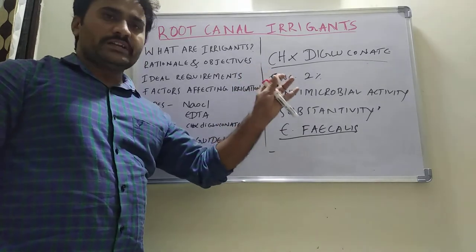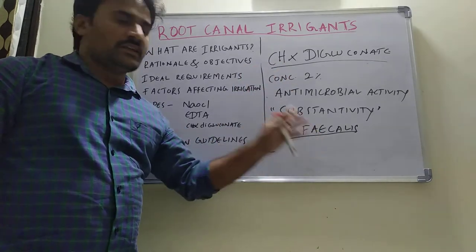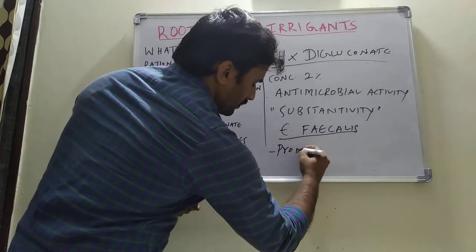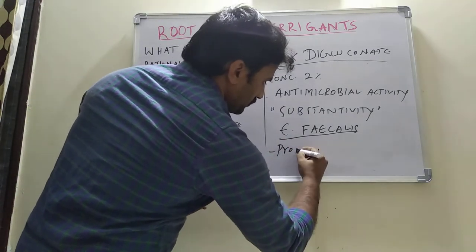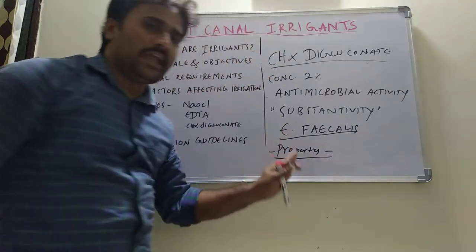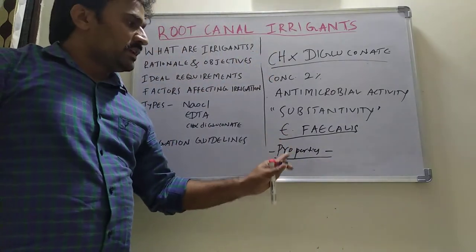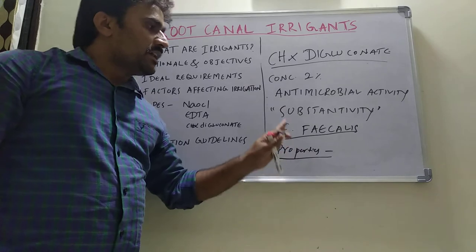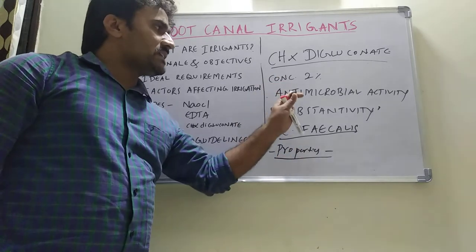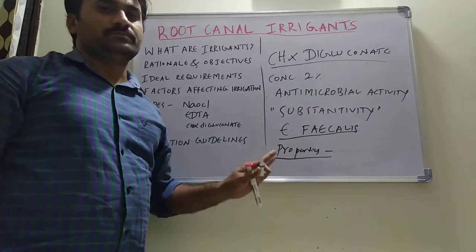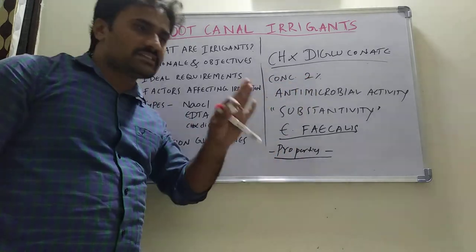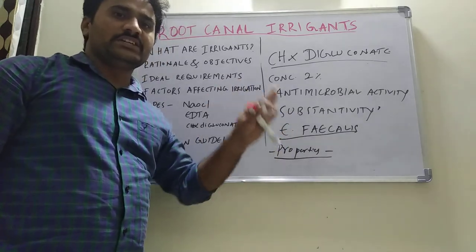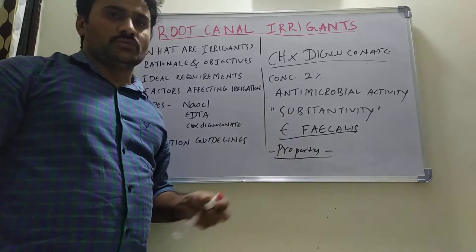Chlorhexidine digluconate is used at a concentration of 2%. Regarding its properties: it does not have tissue dissolving capacity, it does not remove the smear layer. Its only main property is antimicrobial activity.